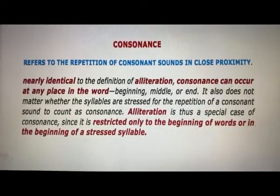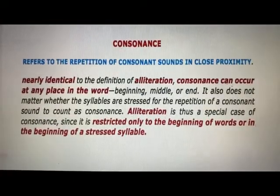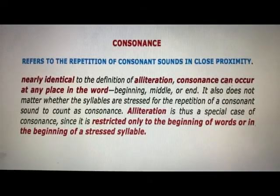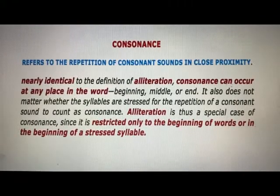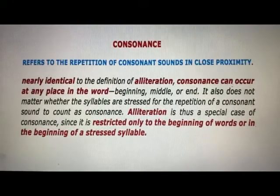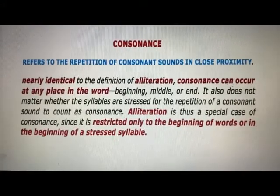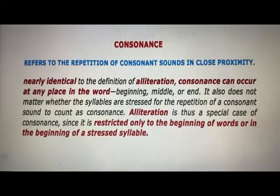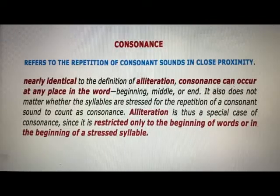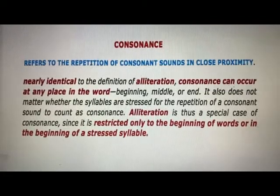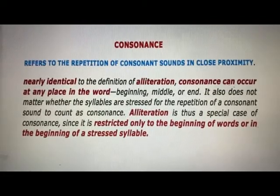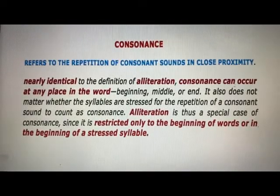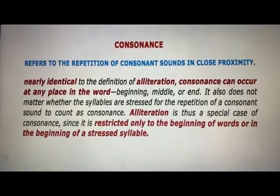The next poetic device is consonance. It refers to the repetition of consonant sounds in close proximity. Nearly identical to the definition of alliteration, consonance can occur at any place in the word — beginning, middle, or end. Alliteration is thus a special case of consonance, since it is restricted only to the beginning of words or the beginning of a stressed syllable. That is the difference between consonance and alliteration.